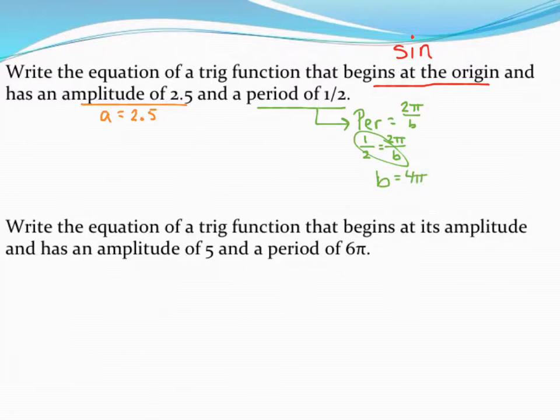That's not the period. That's just the b value. So let's take all this information and piece it together to write my trig function. So I'm going to start with y equals. And then first up, the first blank in my fill-in-the-blank puzzle is the amplitude. And that's 2.5.